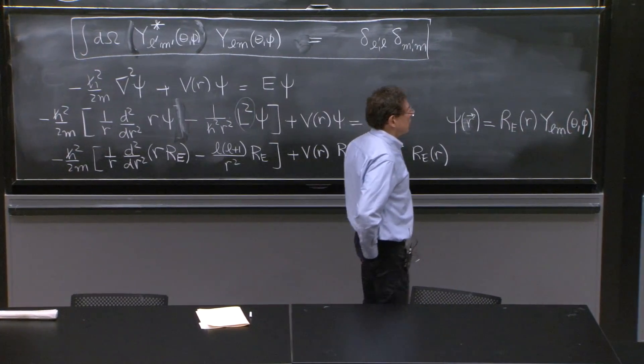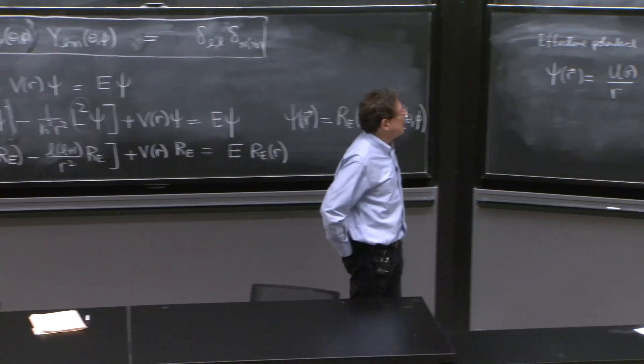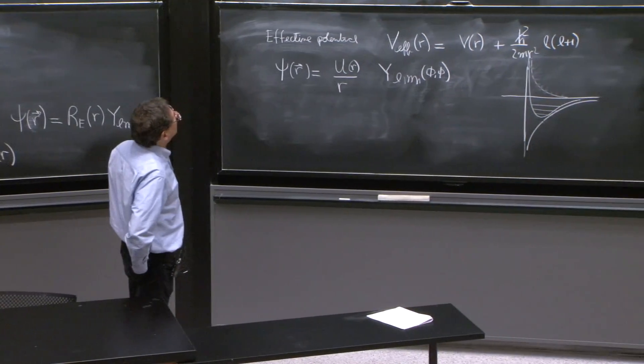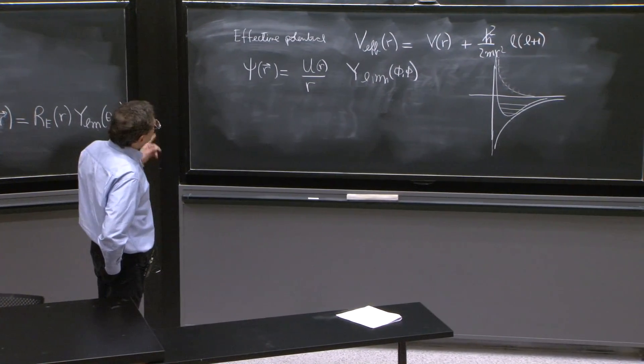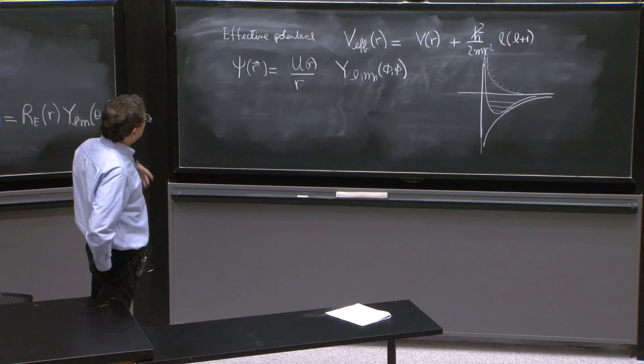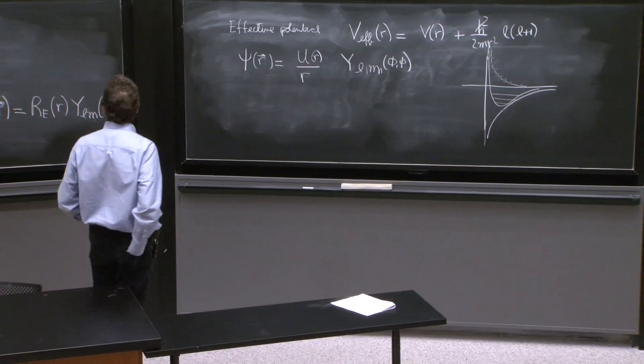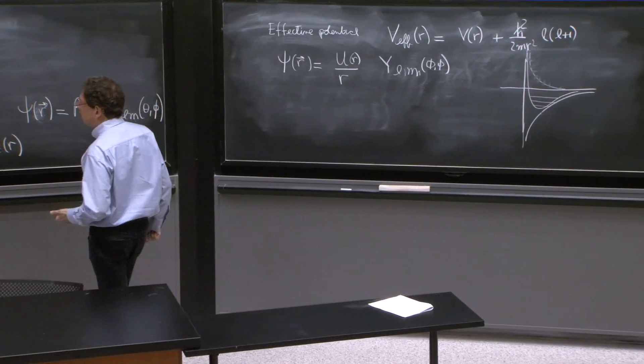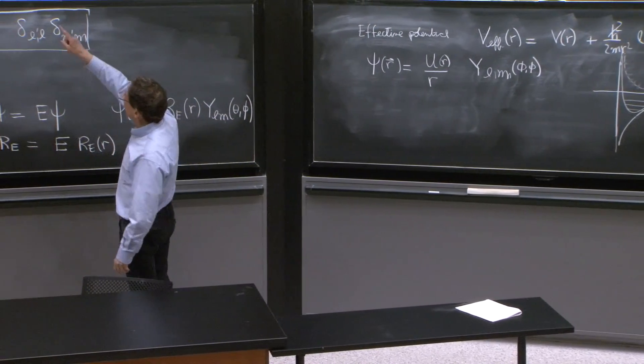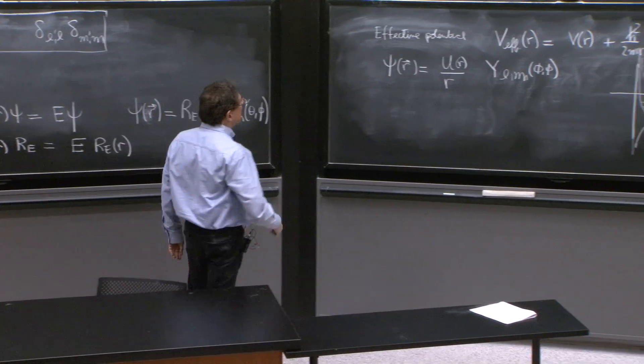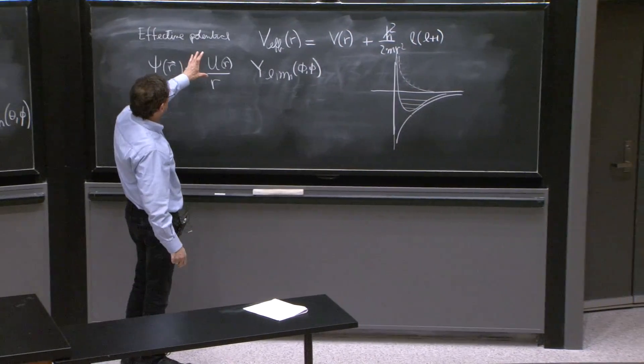There's no m in the differential equation. So that should be good enough. So what's happening is that the m dependence is kind of very simple. It is the e^(imφ) and nothing else. The u doesn't know about it.